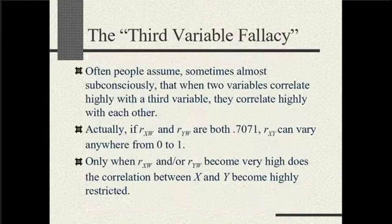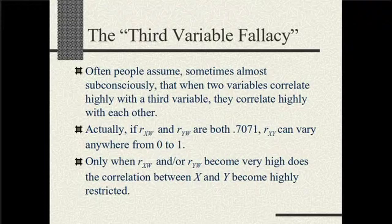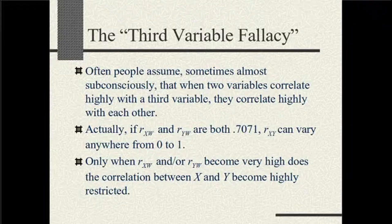There is also something called the third variable fallacy, which means that if two variables are each highly correlated with a third variable, it is assumed that these two variables are highly correlated among themselves — but that may not always be true. Just because X1 and Y are highly correlated with a third variable G does not mean that X and Y are highly correlated among themselves. That has to be properly checked. These are some of the key issues in correlation analysis.